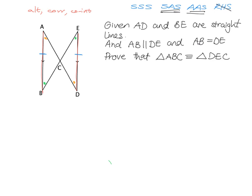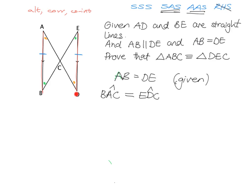Now let's start writing this up nicely. First, AB is equal to DE — and I know that because they told us in the statement, so I write the reason: given. Then I want to show that angle BAC is equal to angle EDC. And why is that true? It's alternate angles on parallel lines.